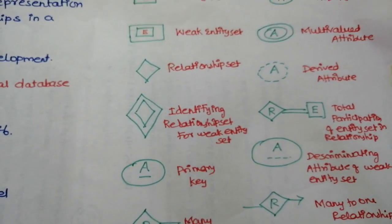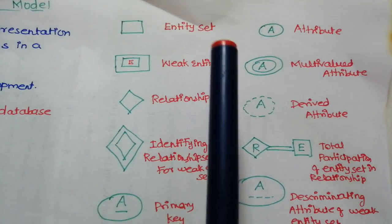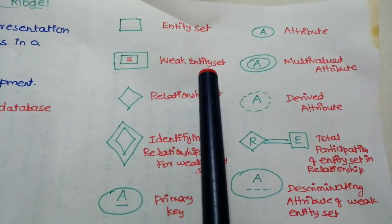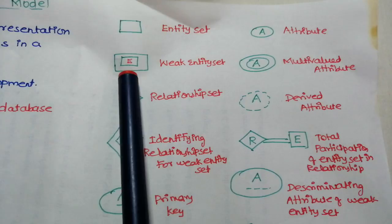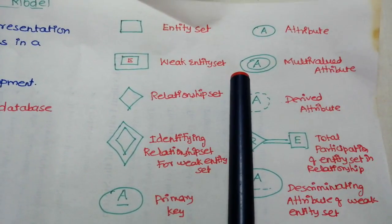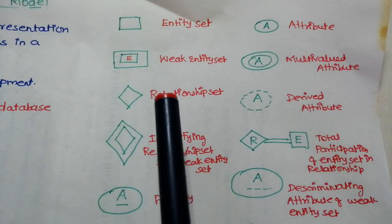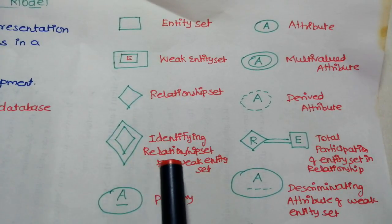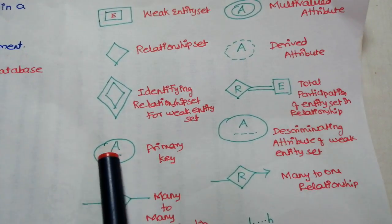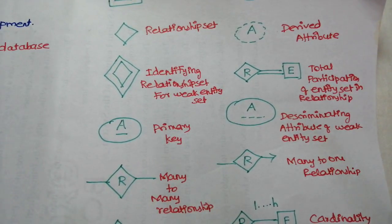There are some additional components. Entity set uses a rectangle. Weak entity set uses a double rectangle — a double box. Multi-valued attribute uses a double oval shape. This is for a future topic. There is also the identifying relationship set, and the weak set uses a double diamond shape. Primary key attribute is shown with an underline.